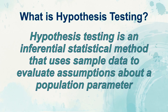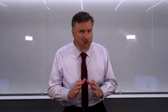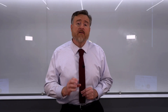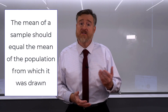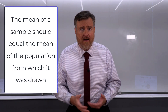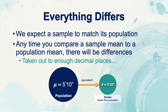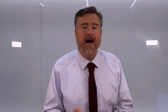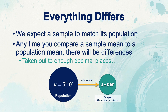Hypothesis testing is an inferential statistical method that uses sample data to evaluate assumptions about a population parameter. We have already learned that when you draw a sample from a population, the mean of the sample should be the same as the mean of the population from which that sample was drawn. Therefore, we expect a sample to match its population. However, any time you compare a sample mean to a population mean, there will be differences. If you take that sample mean out to enough decimal places, you will find a difference between it and the population parameter — the sample mean will always differ from the population mean.